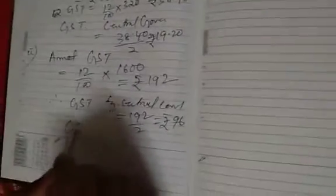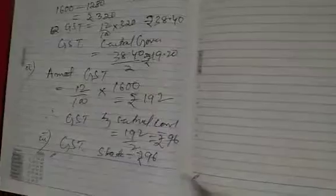And GST by state government, third bit, that is equal to again Rs. 96, because it is equally shared. The total amount of GST equally divided by state and center. Then fourth, the total amount paid by the consumer. Since the cost price for consumer is Rs. 1600 plus amount of GST is Rs. 192, that is equal to total amount paid by the consumer is Rs. 1792. That completes question number 1 from GST.